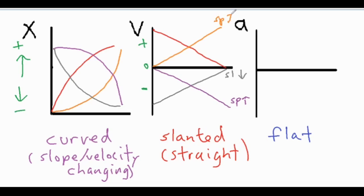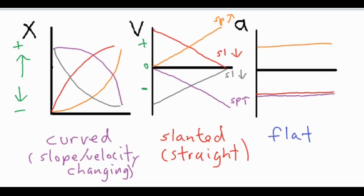When you look at the acceleration versus time graph for these, it's fairly simple — just take a look at the slopes. We basically have two types: a constant positive slope for the orange and the gray, and a constant negative slope for the red and the purple. So the red and the purple would be the same exact graph, and the orange and gray would also be the same graph, because they share the same constant positive acceleration.